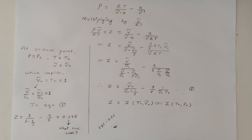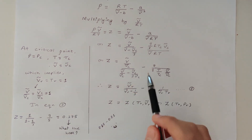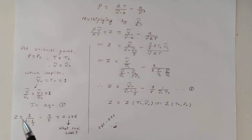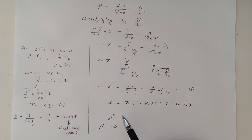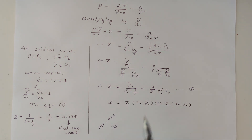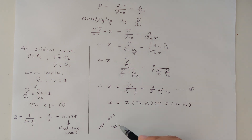This means that according to the van der Waals equation of state, the compressibility factor at the critical point is independent of the constants a and b and is the same value, 0.375, for all gases regardless of their nature or composition. However, in reality this is not true — the actual compressibility factor at the critical point falls within a range of values that differs from 0.375. So the principle of corresponding states as derived from van der Waals is not accurate at the critical point. To correct for this, Pitzer introduced a new parameter called the acentric factor, omega, which will be the topic of the next video.